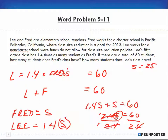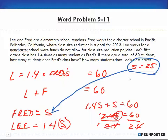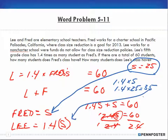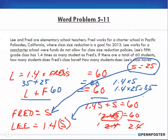S equals 25 — that's Fred. Lee is 1.4 times S, so 1.4 times 25 equals 35. Our initial equation was Lee plus Fred equals 60. Double check: 35 plus 25 equals 60, and 60 does equal 60. So the number of students is correct at 25 for Fred and 35 for Lee. If you have any questions, feel free to telephone or email us, and we'll move on to the next video, problem 5-13.